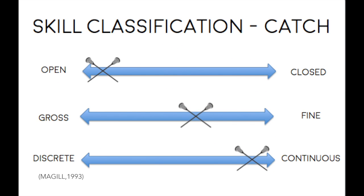A lacrosse catch is classified as an open skill because their actions are dependent on receiving a ball from another player. This skill is a fine motor skill as it requires hand-eye coordination, as the player has to watch the ball in the air into their stick pocket. It is a continuous skill because you are receiving a pass from another and it doesn't always go straight to the stick.